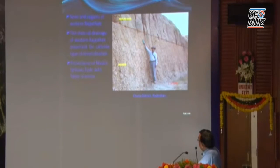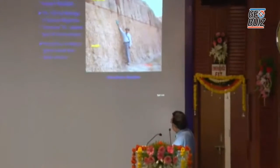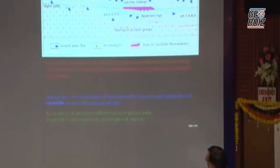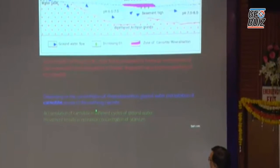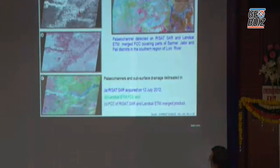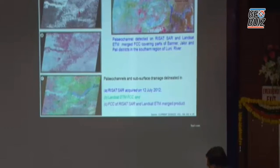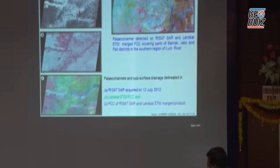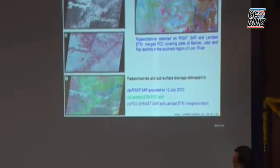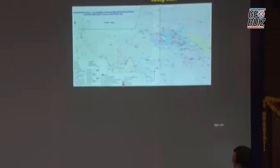Another type is the calcrete or surficial type of deposit. In Rajasthan, these are found in recent sediments and require identification of paleo channels. For that purpose, we have used a lot of microwave data as well as multispectral data. Both have helped in locating a number of paleo channels associated with uranium mineralization in parts of the Barmer, Jalore, and Pali districts of Rajasthan.